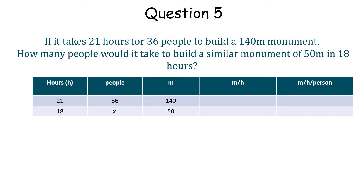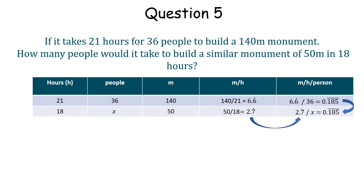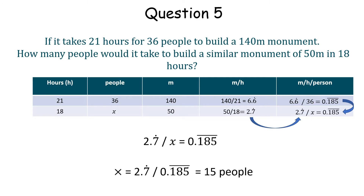140 metres of fence is built, so this is 6.6 metres built per hour. 6.6 metres per hour works out at 0.185 metres per hour per person. Now we have that 2.7 metres per hour of fence is built. Knowing that 0.185 metres per hour is built per person, we can work out by substituting this into a similar equation and then solving it, that it takes 15 people 18 hours to build 50 metres.